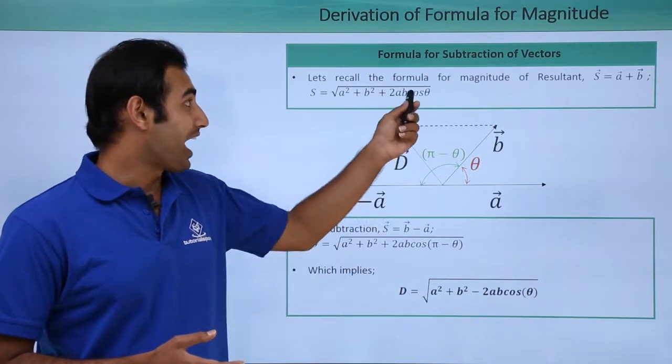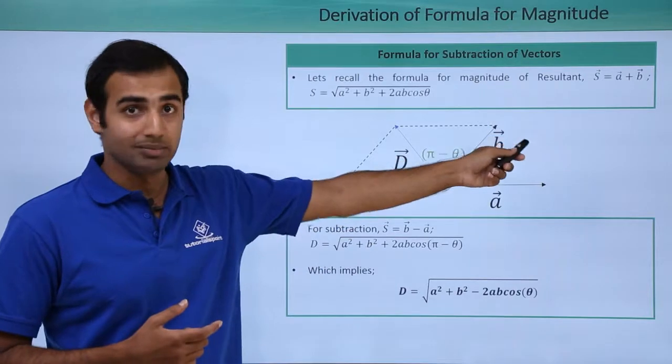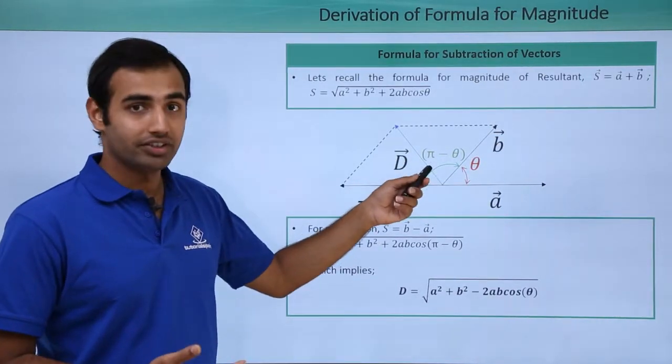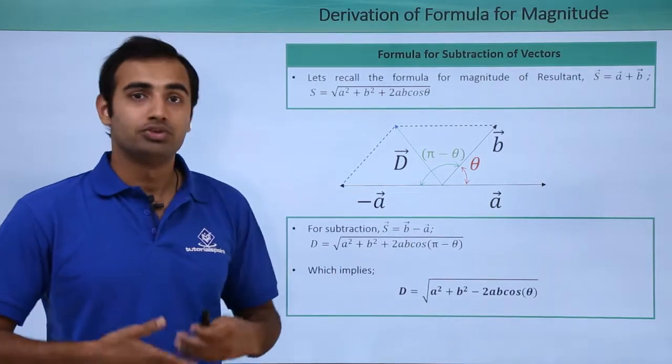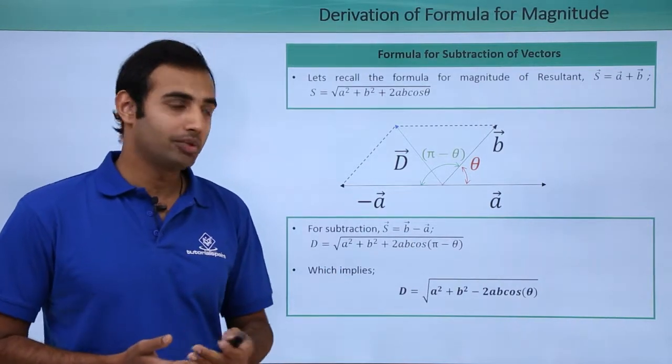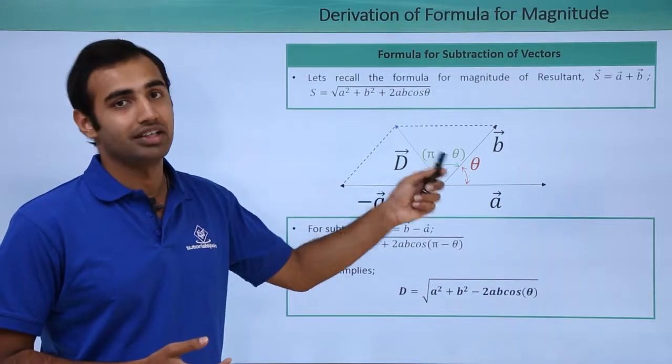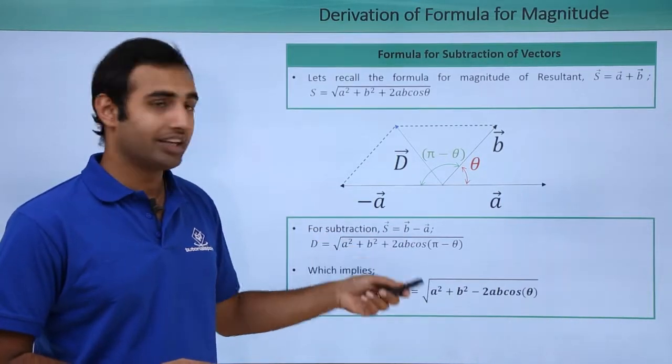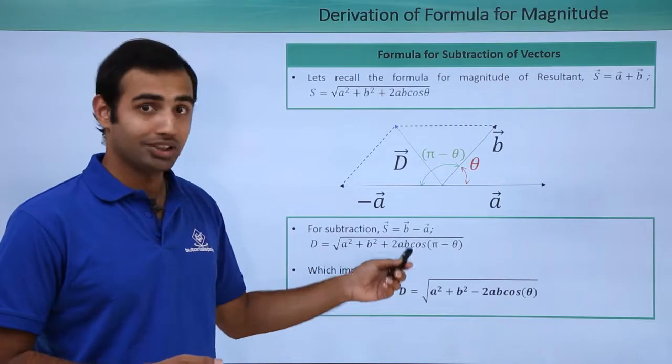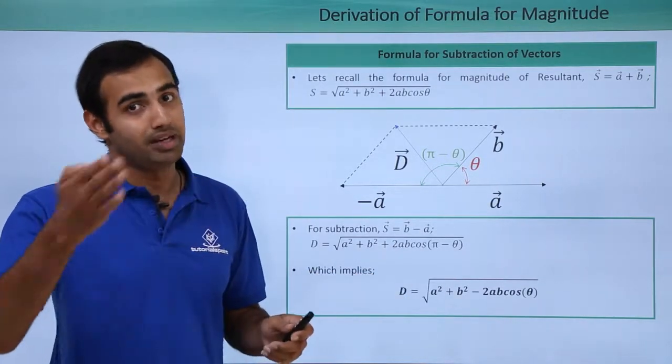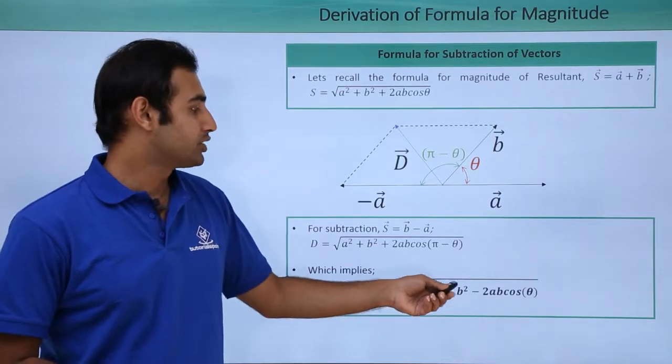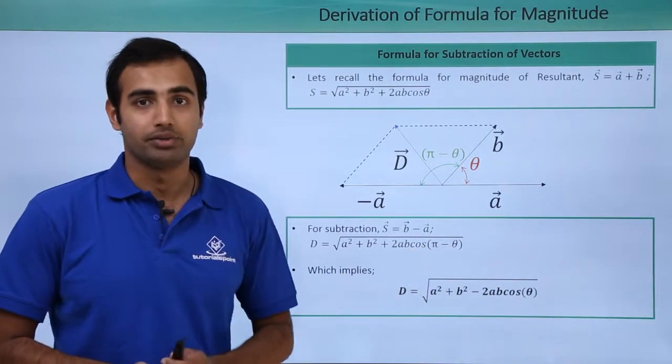However, the angle between the original vectors when I was taking the sum was θ. So what is the angle between the vectors when I am taking the difference? π - θ. So the only change I have to make in the formula is substitute π - θ instead of θ. Once I have done that, I can just do the next step calculation. I know that cos of (π - θ) is simply minus cos θ. So the formula for D becomes √(a² + b² - 2ab cos θ).